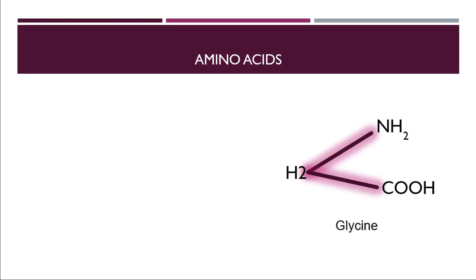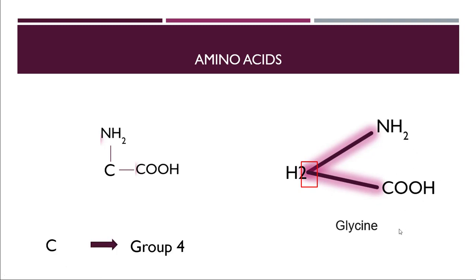The first amino acid is glycine. I asked you to remember the greater-than sign attached with the amino group and carboxylic group. Now what you need to do is put the alpha carbon separately. Carbon belongs to group four, so it needs to make four different bonds. One bond is already made with the amino group and the other bond is already made with the carboxylic group.